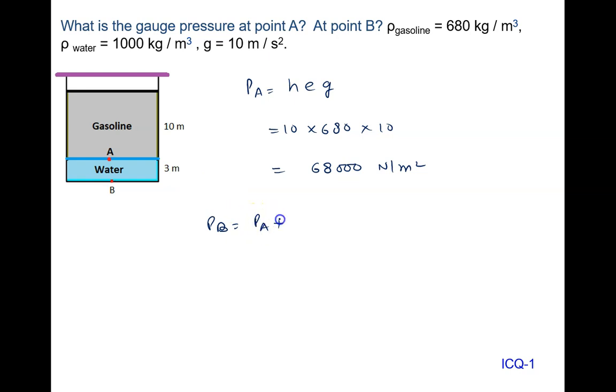plus h rho g. Pressure at point A is 68,000 plus h rho g. h is 3 meters. Density of water is 1000, gravity is 10, so 68,000 plus 30,000.